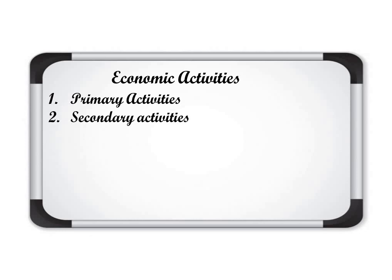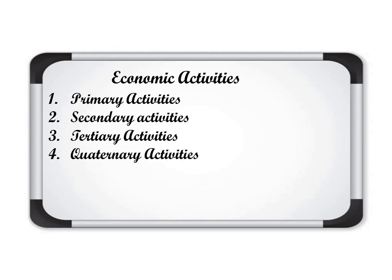Secondary activities include manufacturing, where raw material is used to make finished goods prepared in companies or factories. Third is tertiary activity, which includes services — people doing different work like teachers, doctors, and engineers. These three were the original categories. Now one more has been introduced: quaternary activity, which includes software and computer science, where new technologies are developed. So these are the four economic activities.